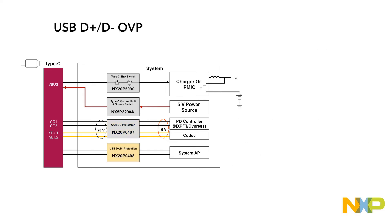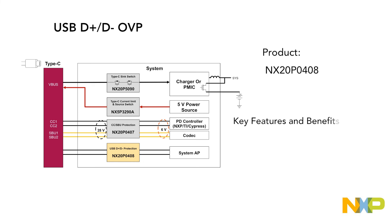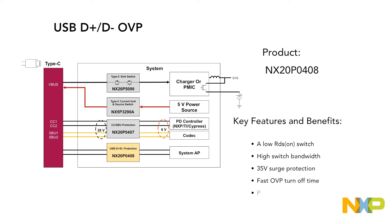Last but not least is the NX20P0408 load switch, with USB D-plus and D-minus overvoltage protection. The NX20P0408 features a low RDSON switch, high switch bandwidth, 35V surge protection, a fast OVP turnoff time, and a post-stage clamp circuit.